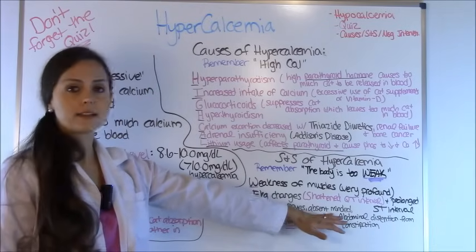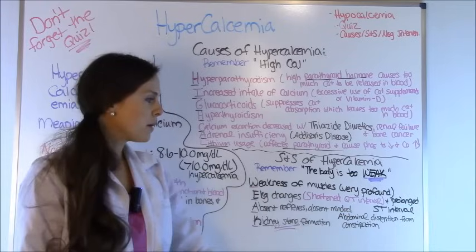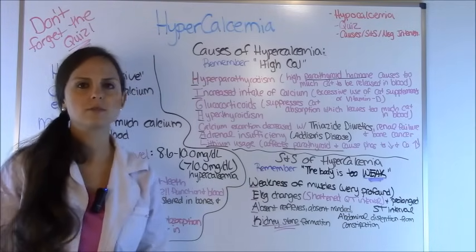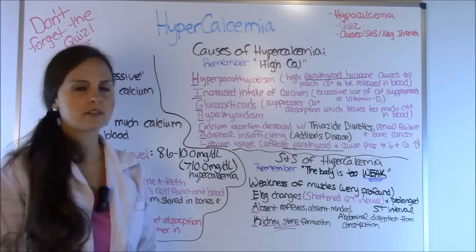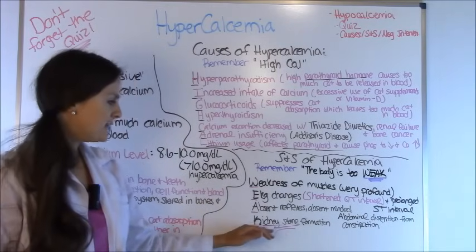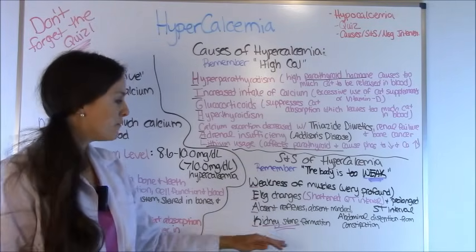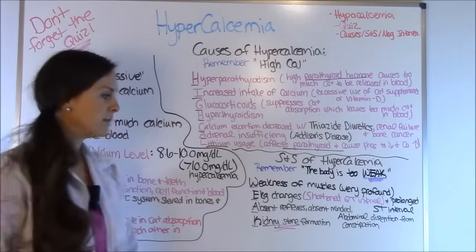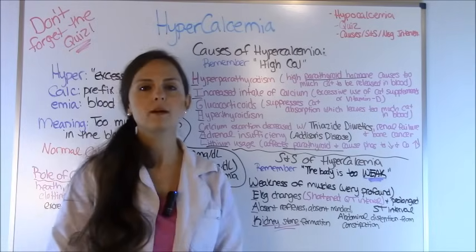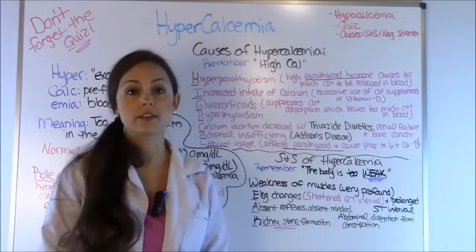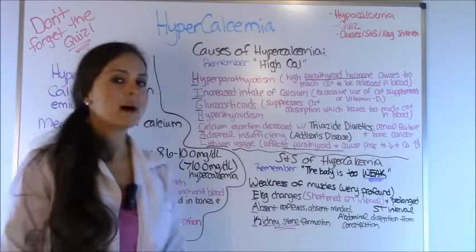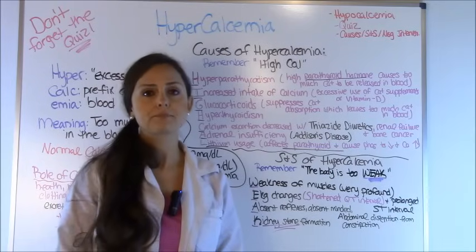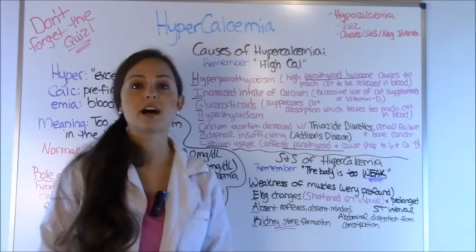Patients will be absent-minded and disoriented. They're also probably going to have abdominal distension from constipation — the bowels move slowly. And then K stands for kidney stone formation, another big test question. They can develop renal calculi, so you definitely want to watch out for that.